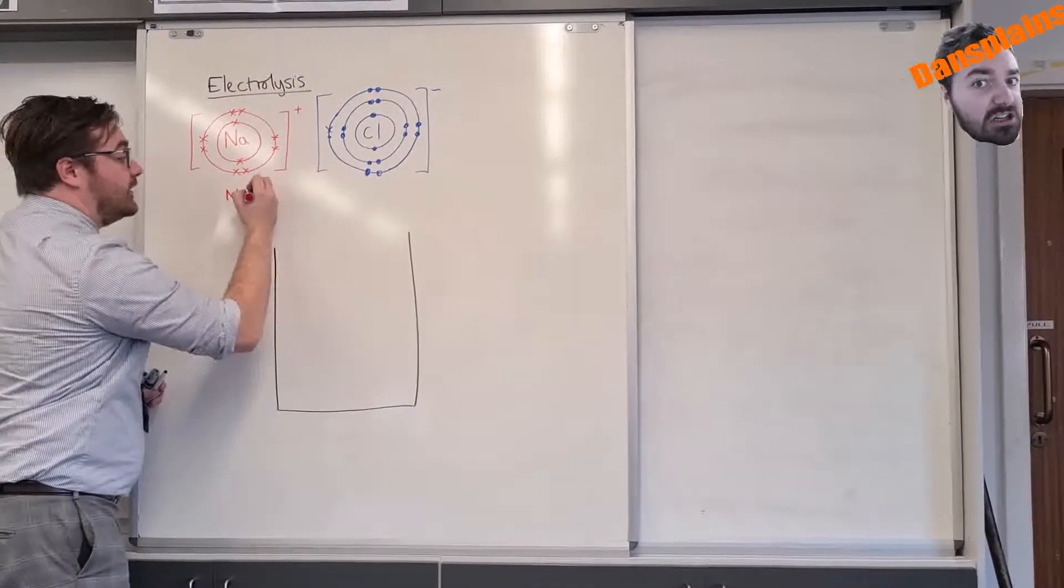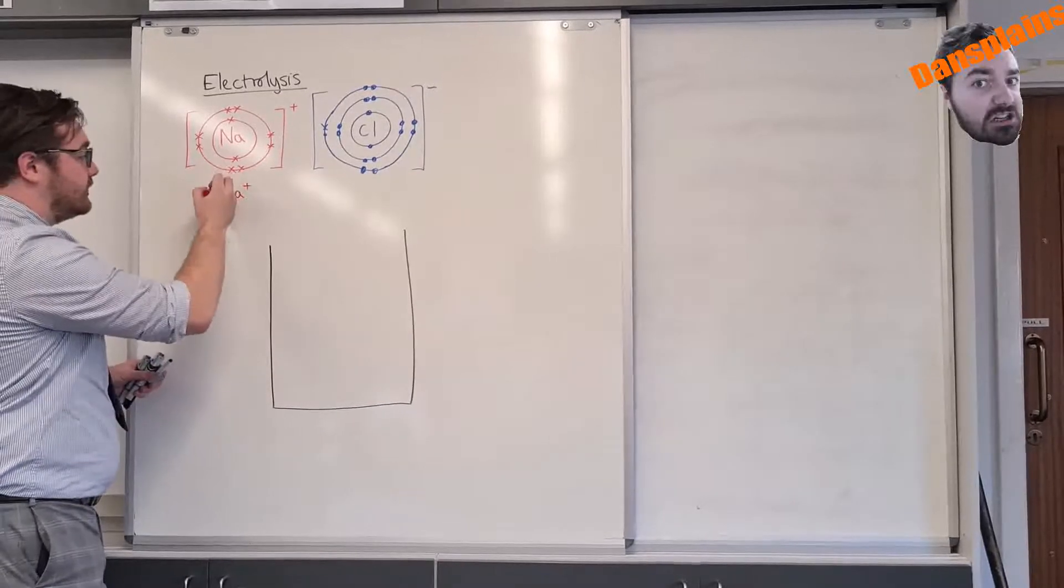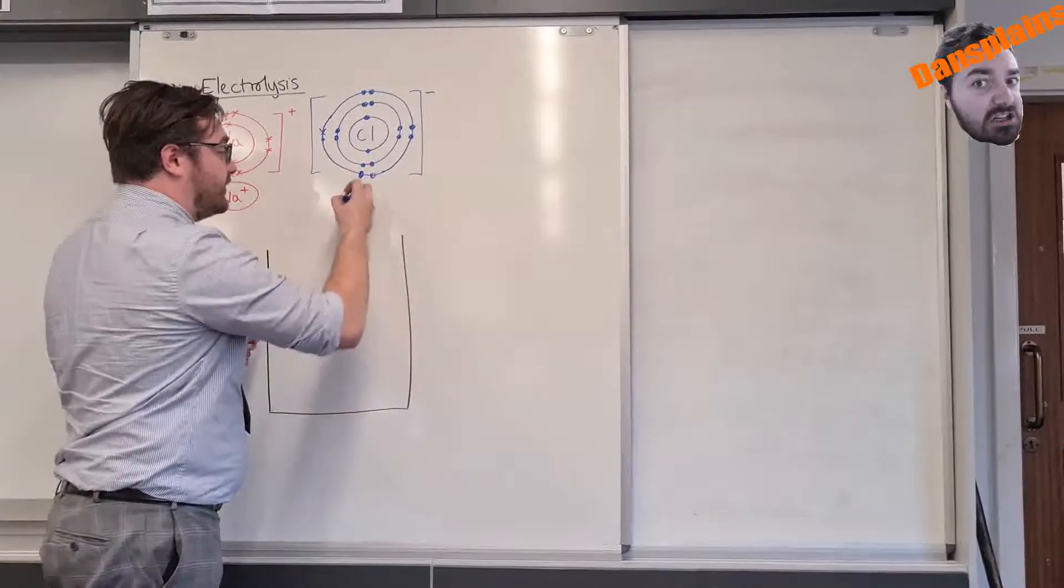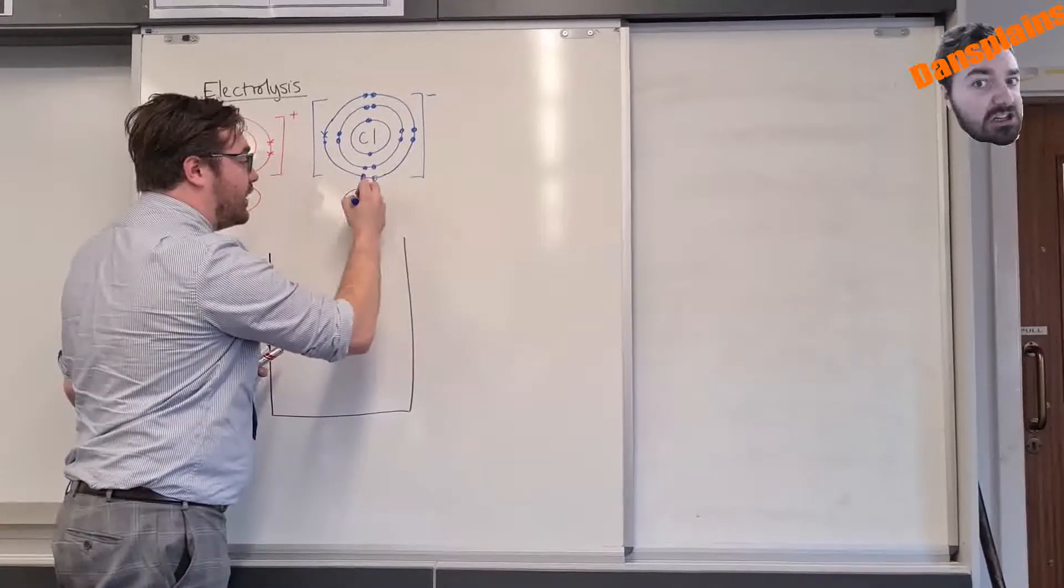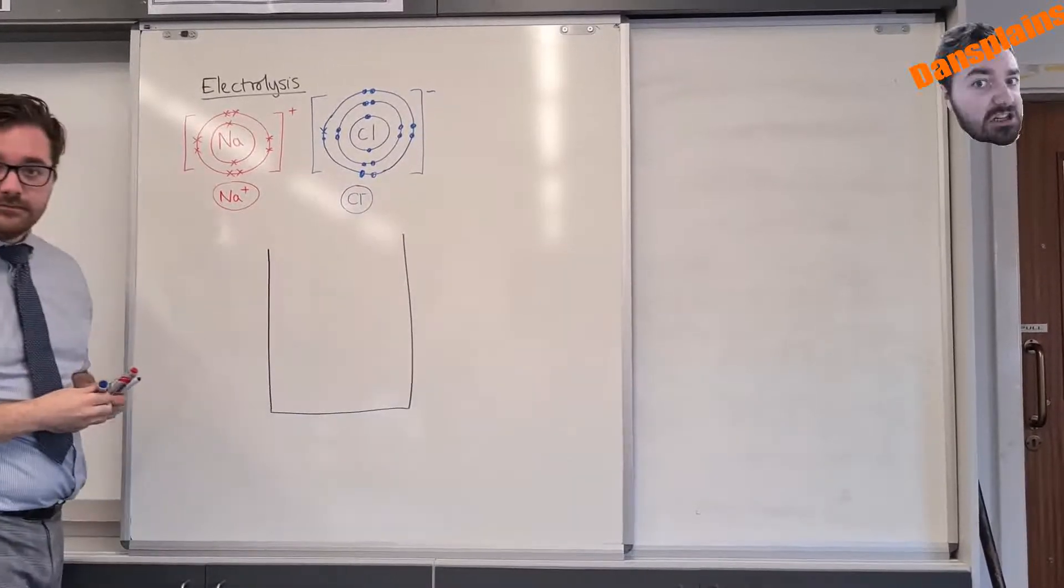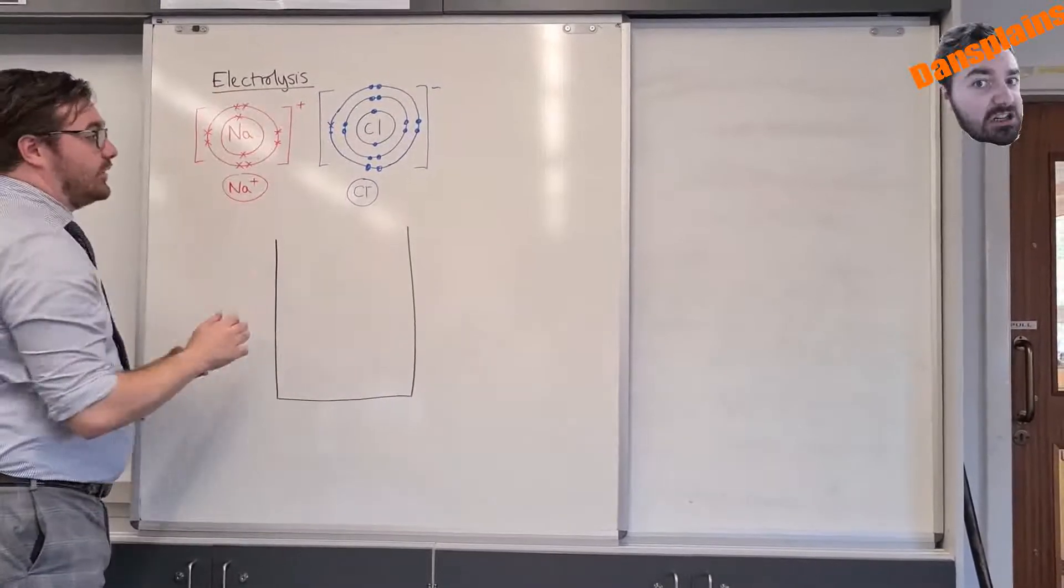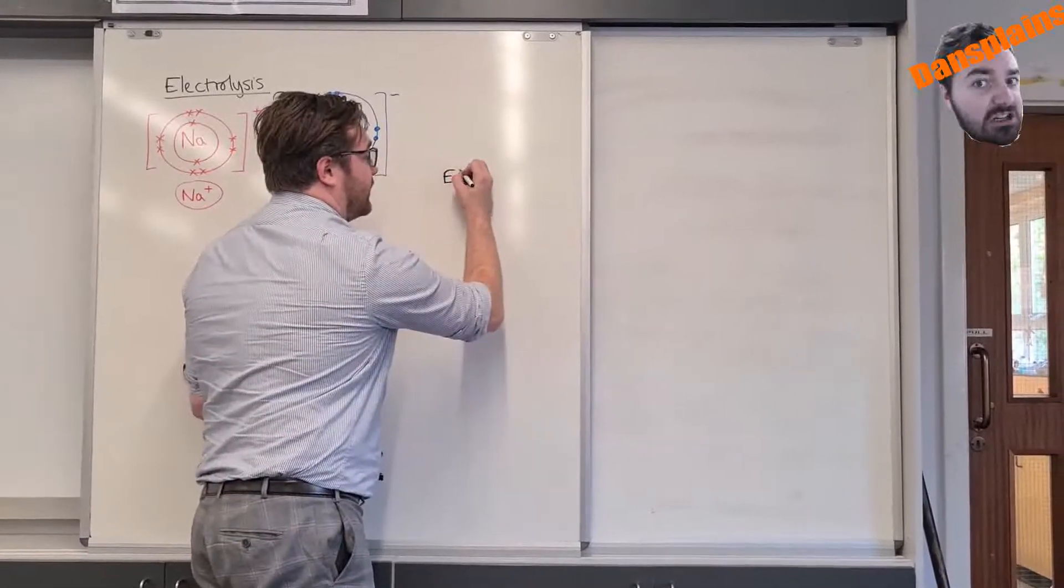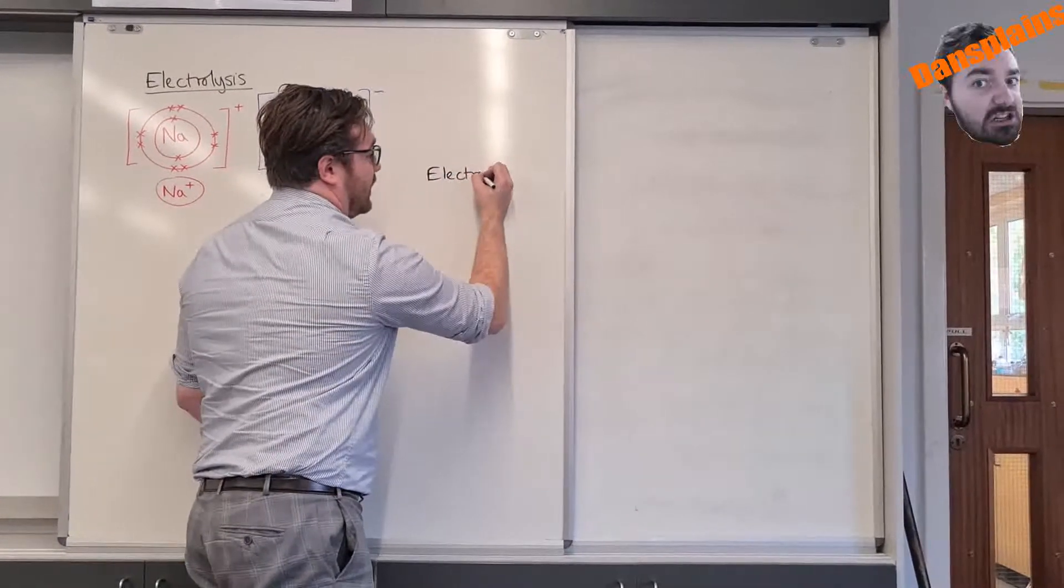These ions as if they are Na+ like so and Cl-. That is obviously the other way that I can write these ions. Now our word electrolysis actually can be broken down into two different parts: electro.